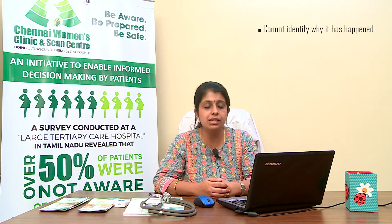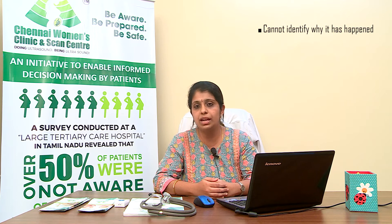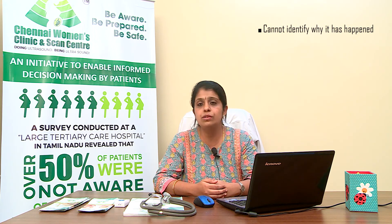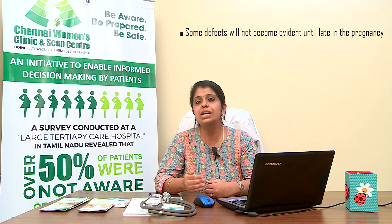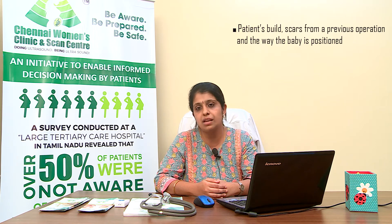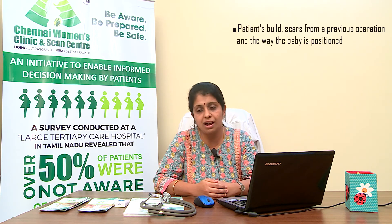So what are the limitations of an anomaly scan? There are definitely certain limitations. Though the anomaly scan can detect abnormalities, it cannot identify why they have happened. When a doctor identifies an abnormality, it is always essential to undergo genetic counseling for further testing such as amniocentesis. While the scan is done by 18 to 20 weeks, some defects — called evolving problems — may not yet be evident. Other limitations include when the mother's weight is high or she is obese, when there are previous cesarean or operation scars on the mother's abdomen, in the case of twins or multiple pregnancies, or when the baby's position is not right.